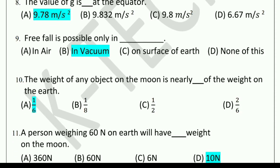Ninth question: Free fall is possible only in dash. Options: in air, in vacuum, on the surface of earth, or none of these. The correct option is in vacuum. Free fall is possible only in vacuum.